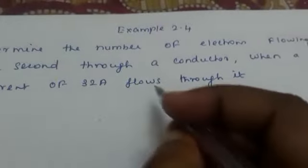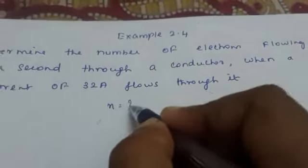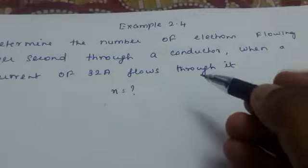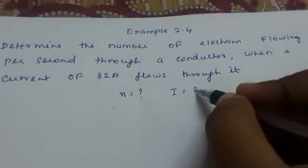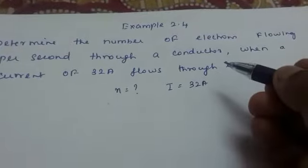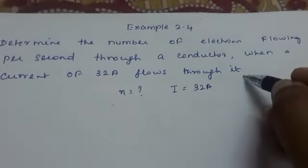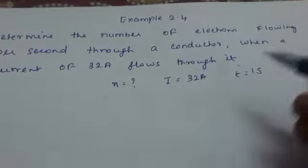Now what we have asked to find is the number of electrons, n value. Now what is given is the current, which is 32 ampere. The time given is per second, so time equals 1 second.